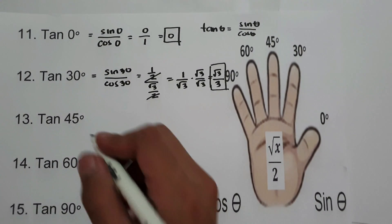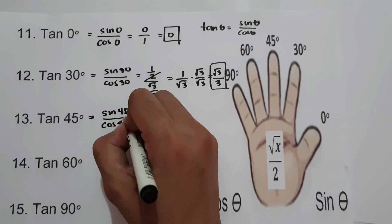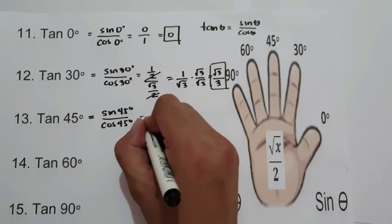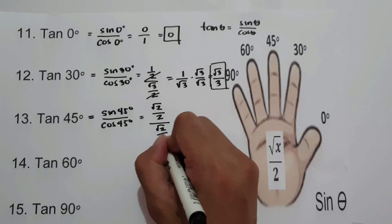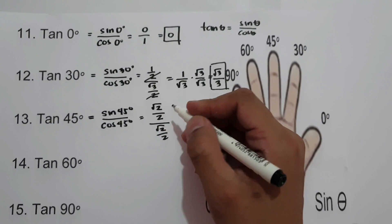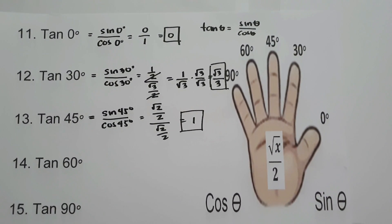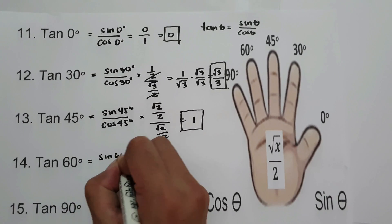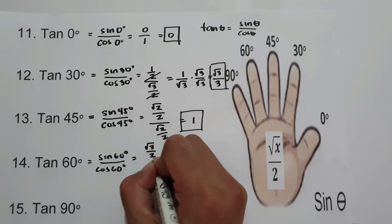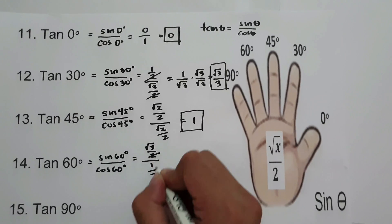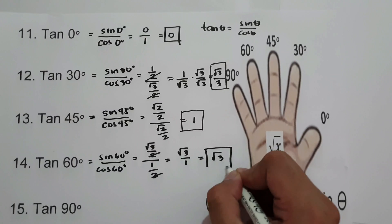For tangent 45°, that is sine 45° over cosine 45°. Sine 45° is square root of 2 over 2, and cosine 45° is also square root of 2 over 2. Dividing these equals 1, so tangent 45° is 1. For tangent 60°, that is sine 60° over cosine 60°. Sine 60° is square root of 3 over 2, and cosine 60° is 1/2. Canceling gives square root of 3 over 1, which is square root of 3. Tangent 60° is square root of 3.